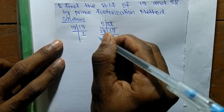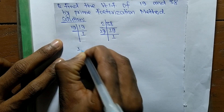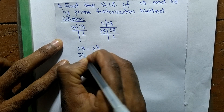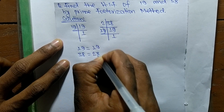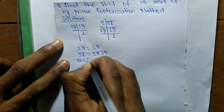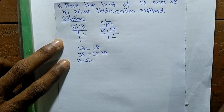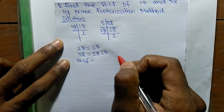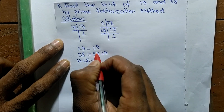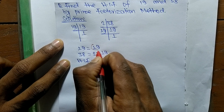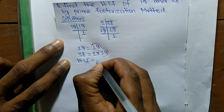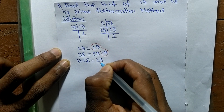From these prime factors we can write: 19 = 19, and 38 = 2 × 19. To find the HCF, we identify the common factors of 19 and 38. The common factor is 19, so the HCF is equal to 19.